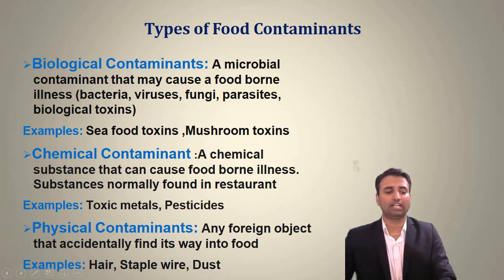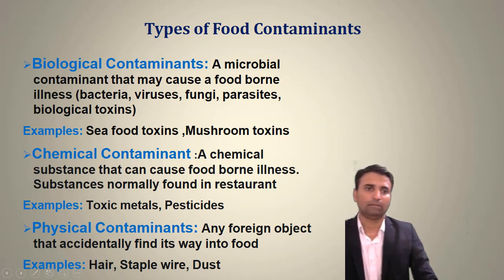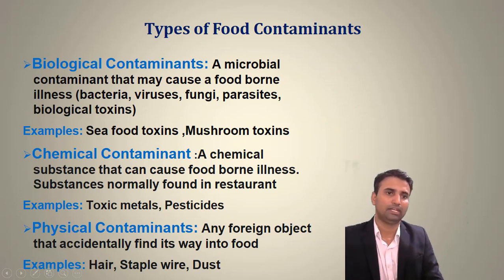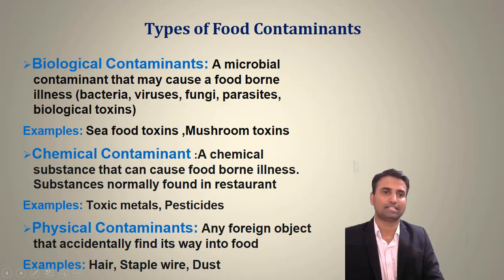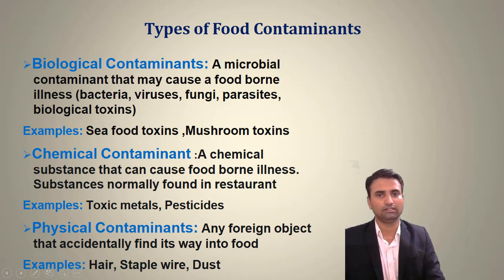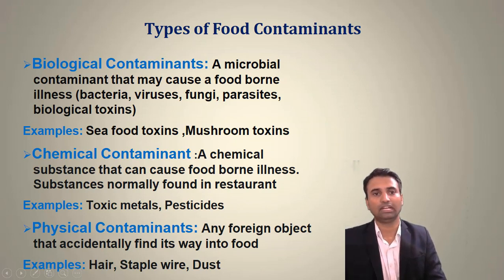There are three kinds of food contaminants: biological, chemical, and physical. Biological contaminants may cause foodborne illness from bacteria, viruses, fungi, parasites, and biological toxins — for example, seafood toxins and mushroom toxins. Whatever originates from biological sources like bacteria, virus, fungi, or parasites falls under biological contaminants.